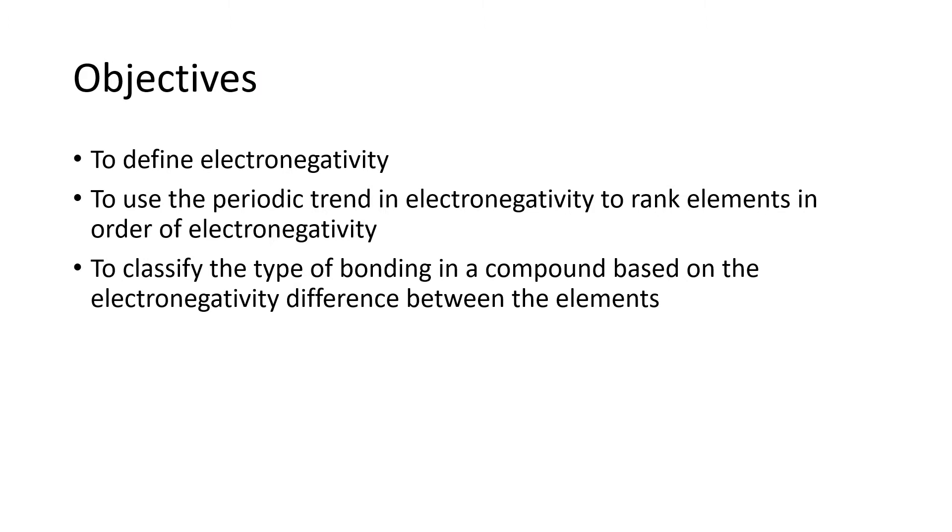Our objectives include defining electronegativity, using the position of elements in the periodic table to rank these elements in order of increasing or decreasing electronegativity, and developing a way of classifying the bonding in a compound based on the difference in electronegativity between the elements that are present in that compound.